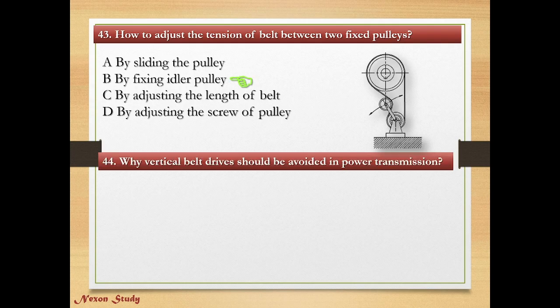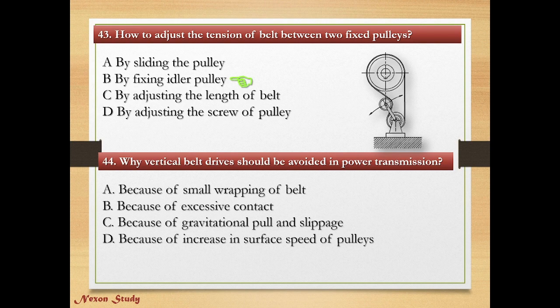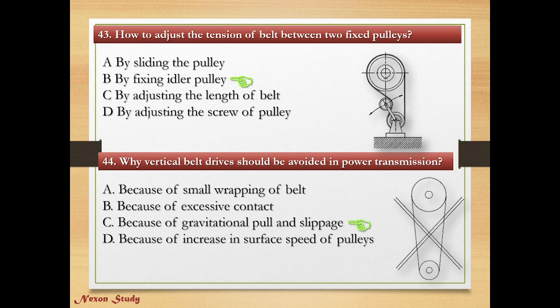Question: Why should a vertical belt drive be avoided in power transmission? Options: because of small wrapping of belt, because of excessive contact, because of gravitational pull and slippage, because of increase in surface speed of pulleys. Right answer is because of gravitational pull and slippage.